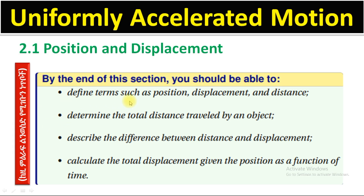We will define terms such as position, displacement, distance, and related source terms. We will determine the total distance traveled by an object as the object moves. The third objective is how to describe the difference between distance and displacement.